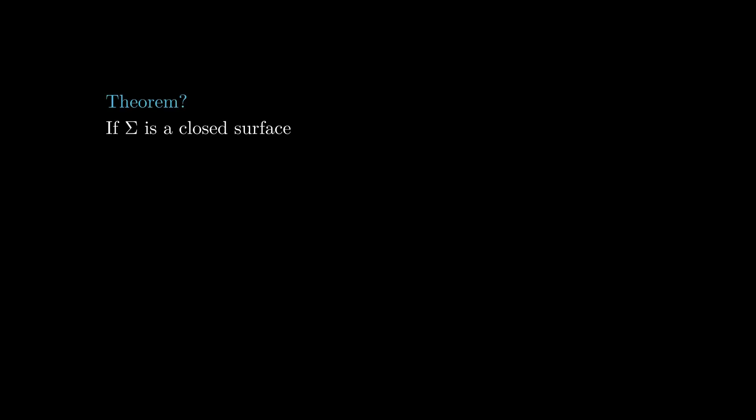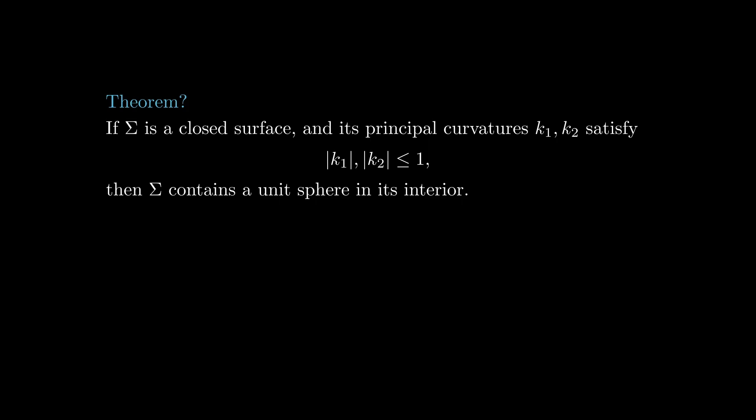With this, we can now state what would be a surface analog of the moon in a puddle theorem. If a closed surface σ is such that its principal curvatures are bounded in absolute value by 1, then its interior contains a unit sphere.